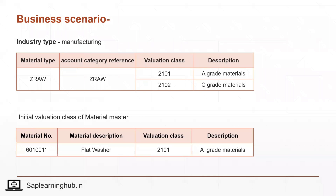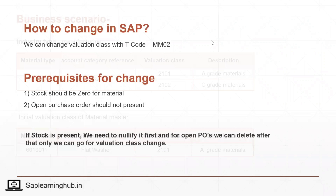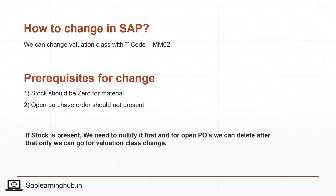Let's see the process of changing the valuation class in the system. The T-code for changing the valuation class is MM02 — MM02 is used to change a material master.